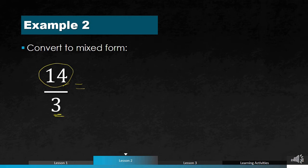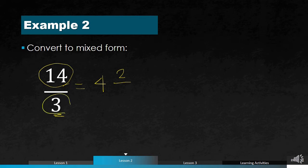What is the remainder? 14 minus 12 gives a remainder of 2. We place that 2 as the numerator of the proper fraction, and simply copy the denominator which is 3. Therefore, the answer is 4 and 2 thirds.